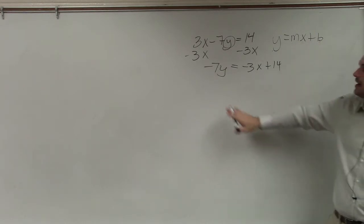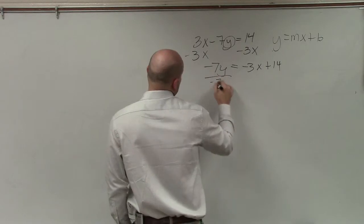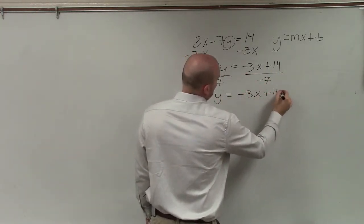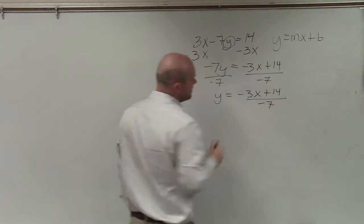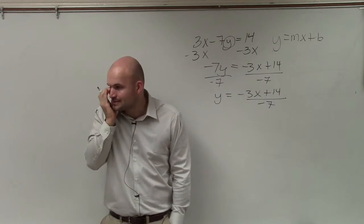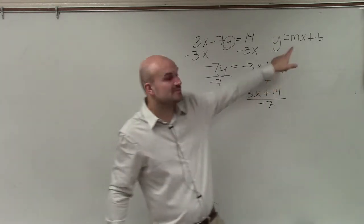As you can see, this mx plus b. And now I need to undo multiplying by negative 7, which will be to divide by negative 7. So I have y equals negative 3x plus 14 divided by negative 7. For literal equations, that was OK to leave it in that format, but now that we're writing things in slope-intercept form, I want it to be written in this format.